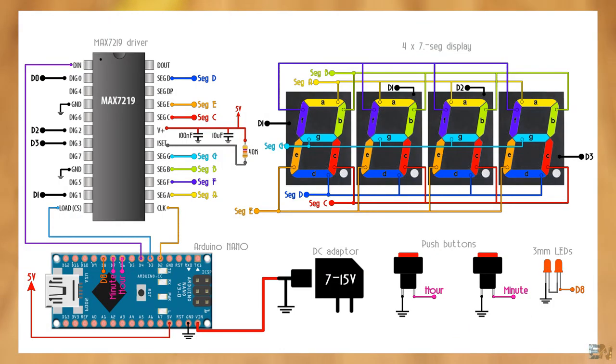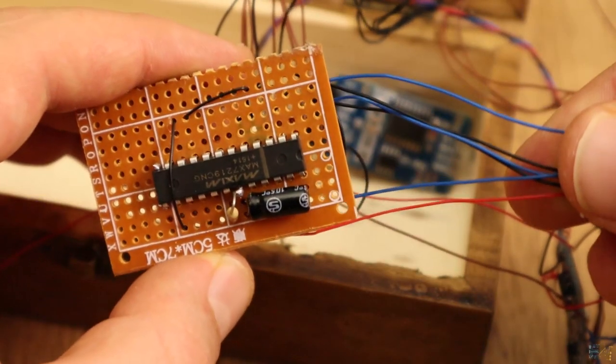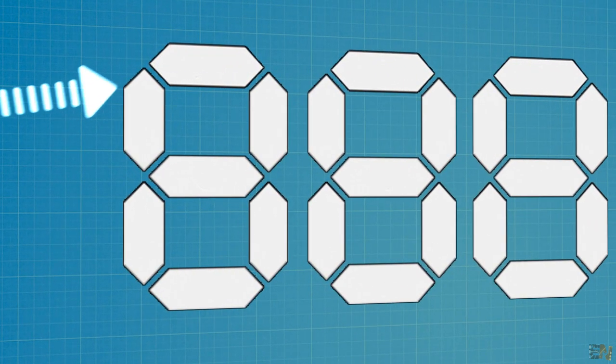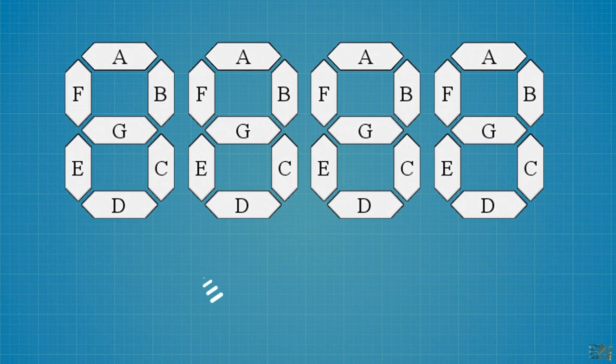Use this schematic and make all the connections. This MAX7219 driver could control 4 7-segment displays and here is how this chip does that. Each 7 segment display has 7 segments, obviously, each labeled with a letter from A to G.